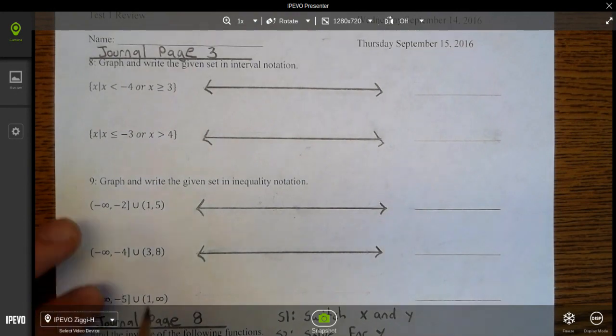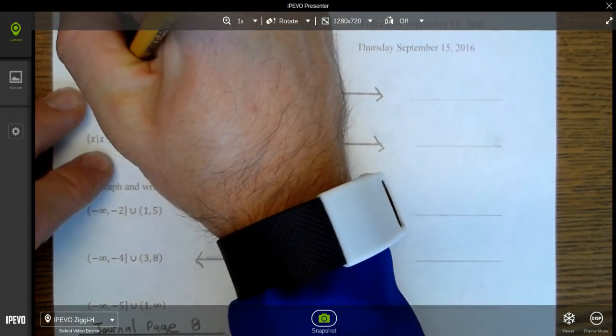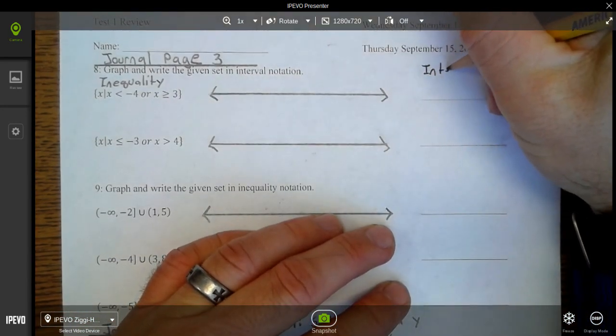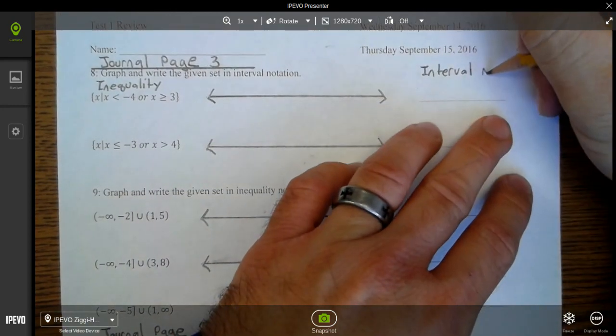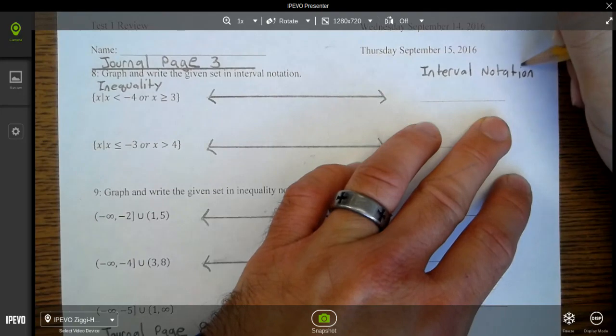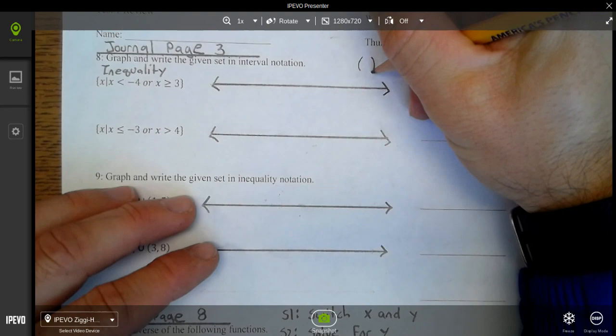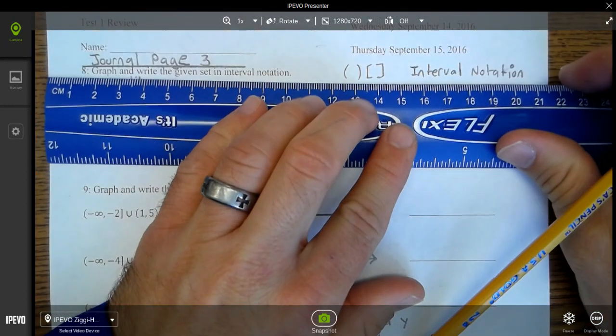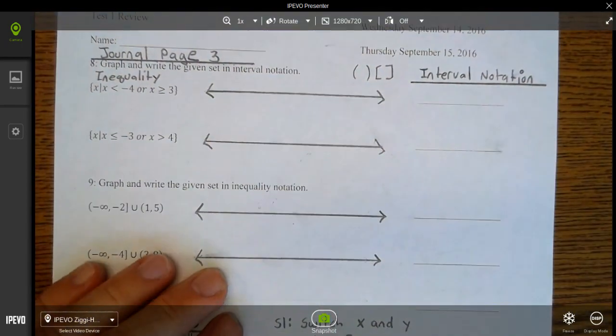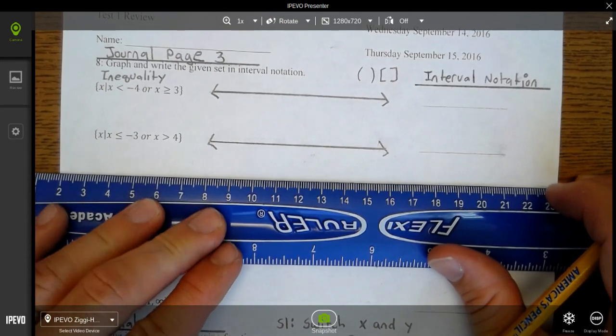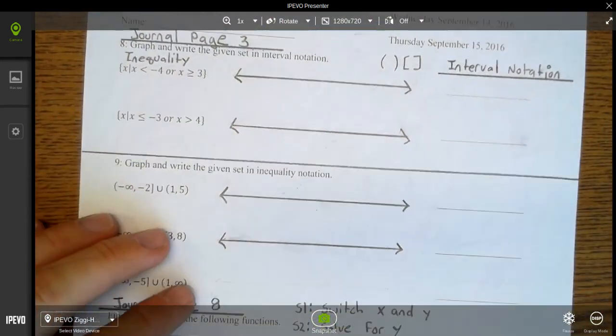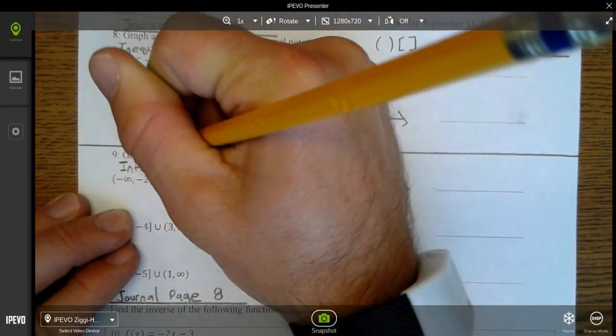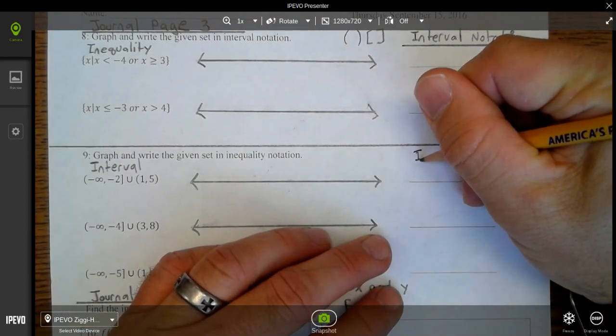This is inequality notation. Interval notation, which you'll put here, uses parentheses and brackets. Now I'm going to draw a line separating 8 and 9 because they're different. This is interval notation, and you want here to write it in inequality notation.